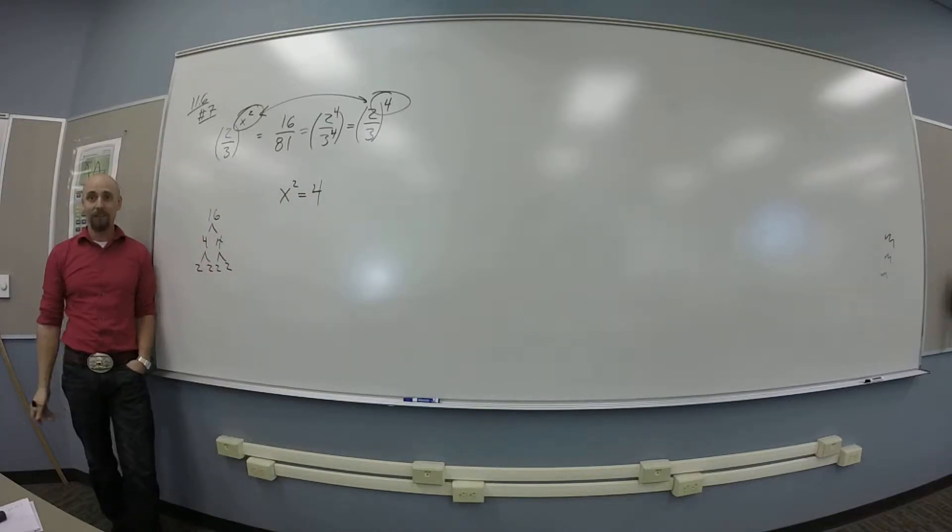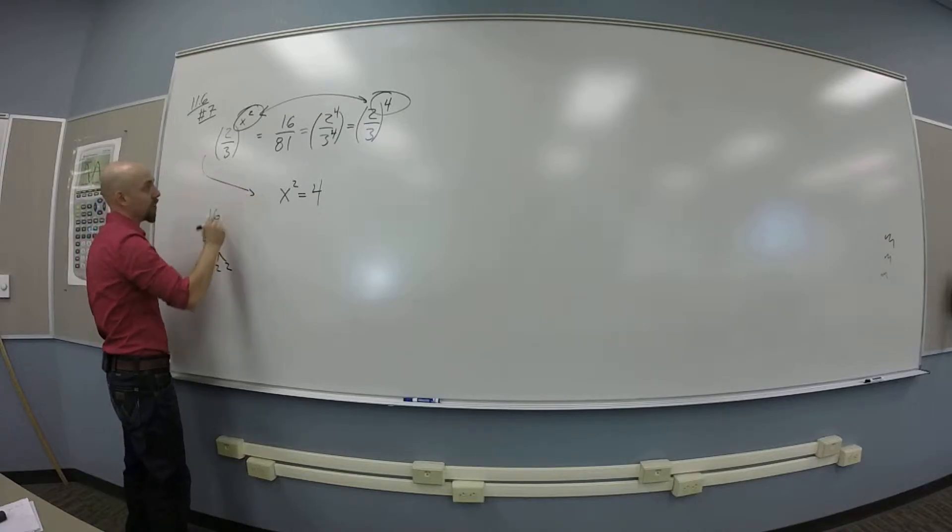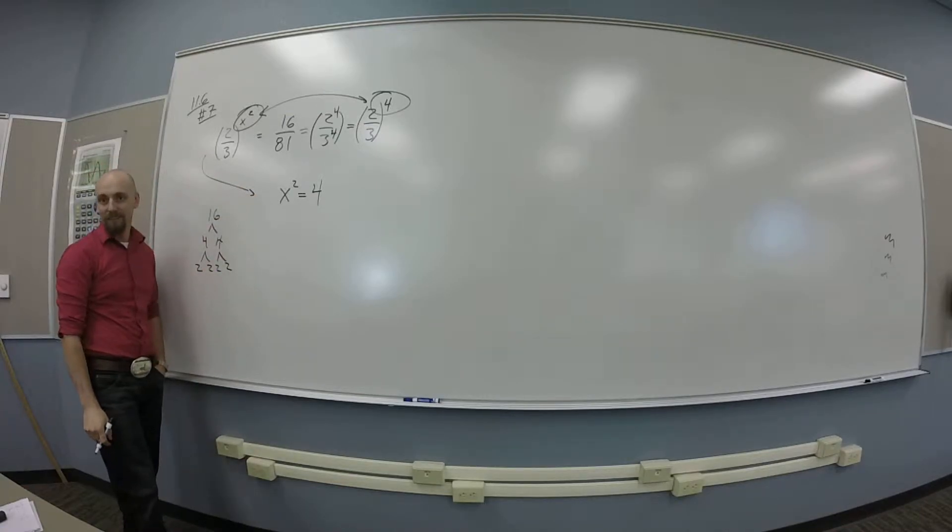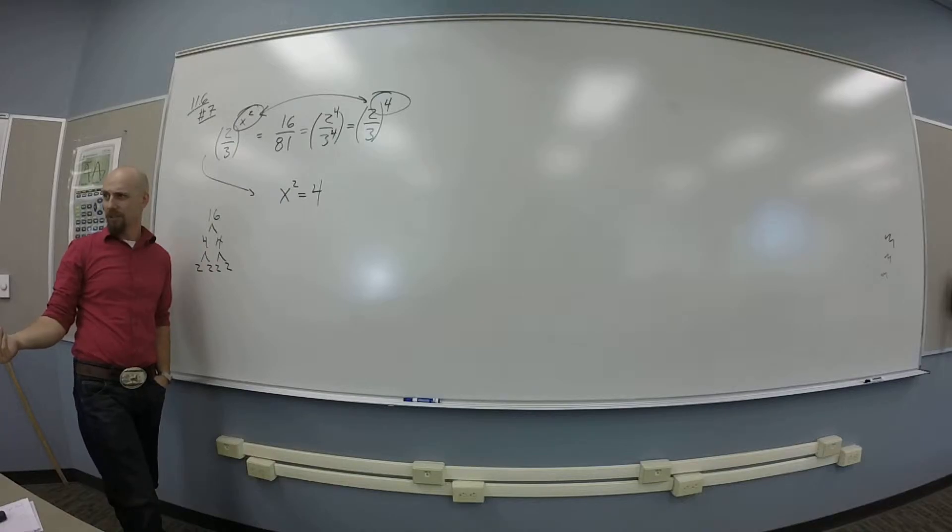In terms of a log, right, the step from here to here is what? Multiplying it by log 3 over 2 to get rid of the... Almost. Taking log 2 thirds of all sides. You guys see that?